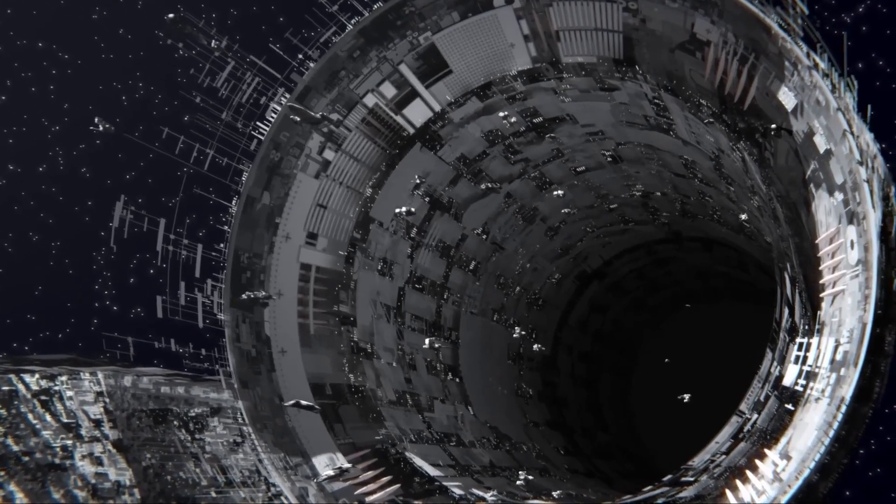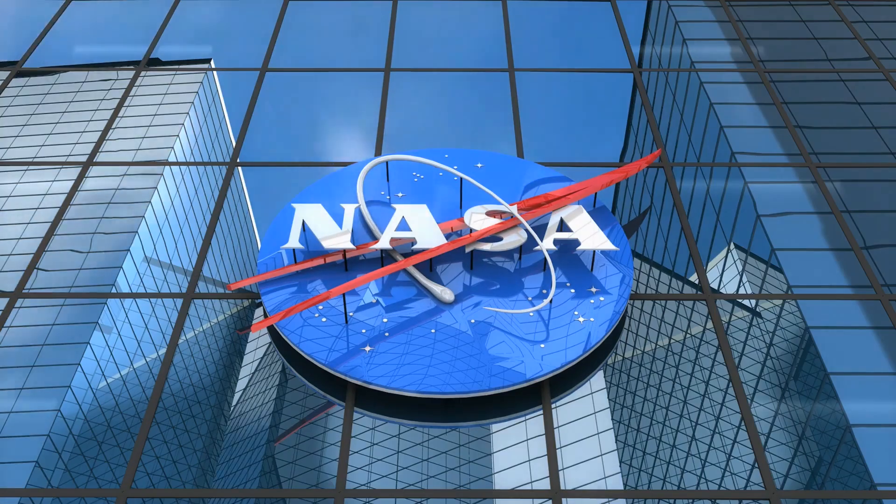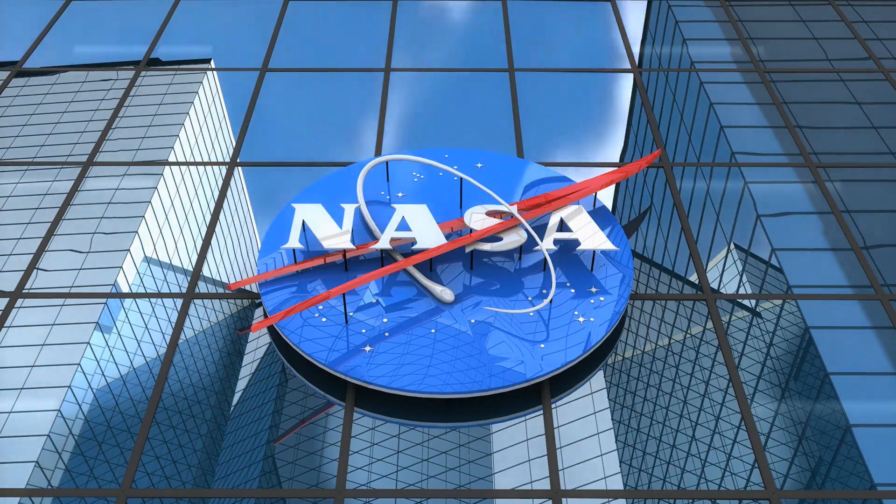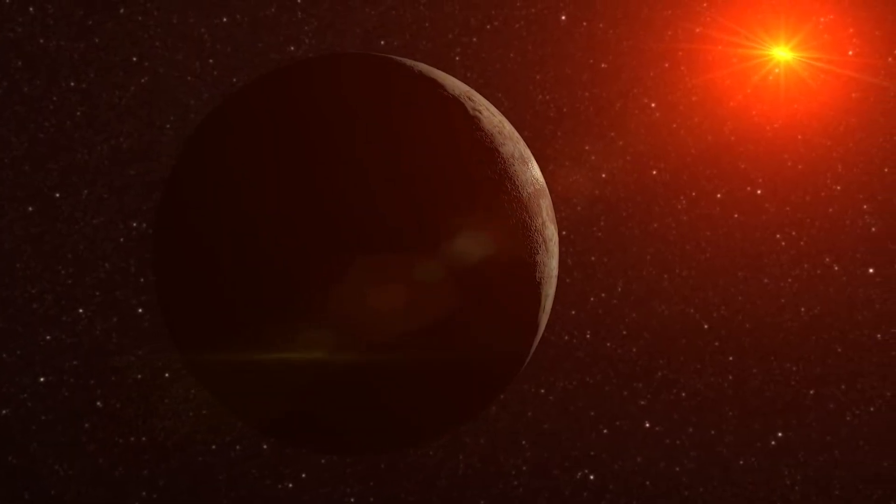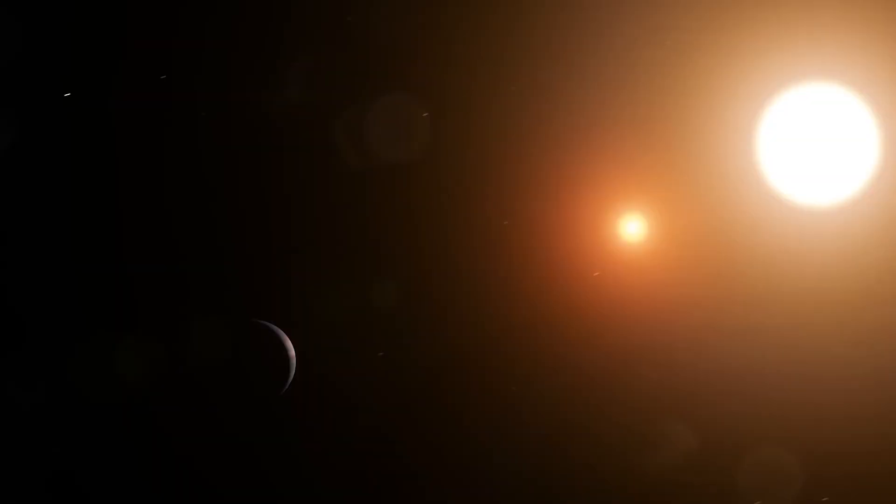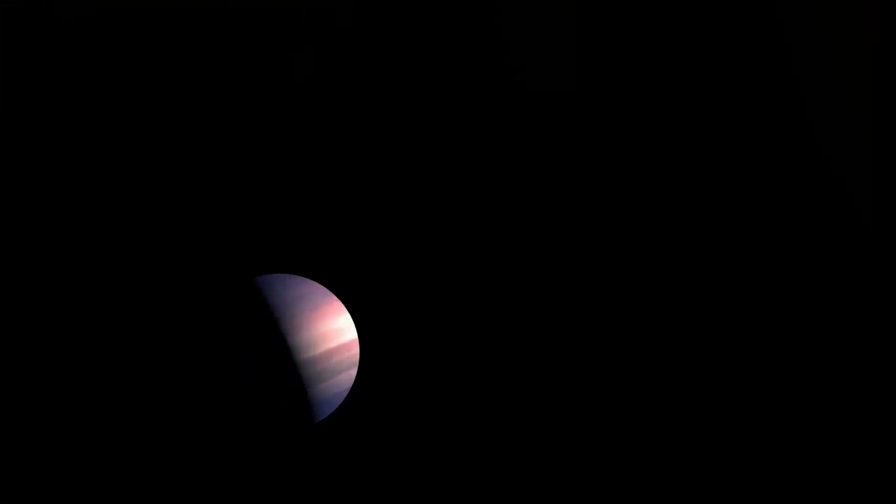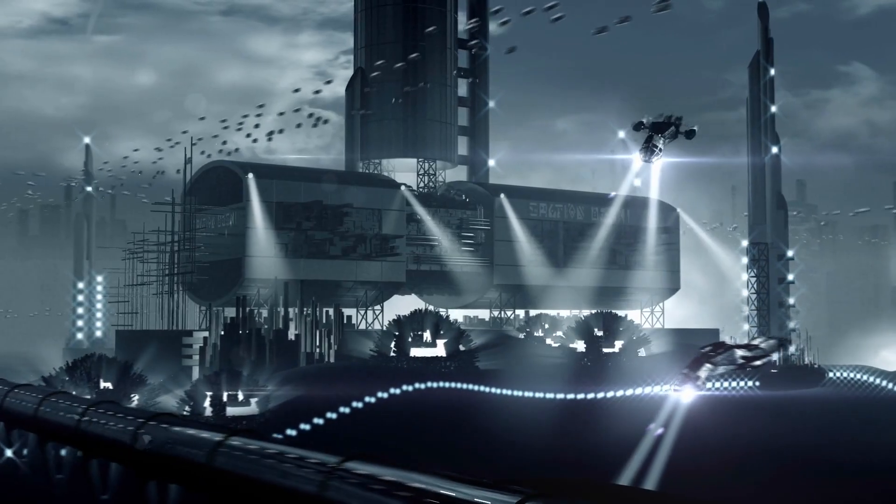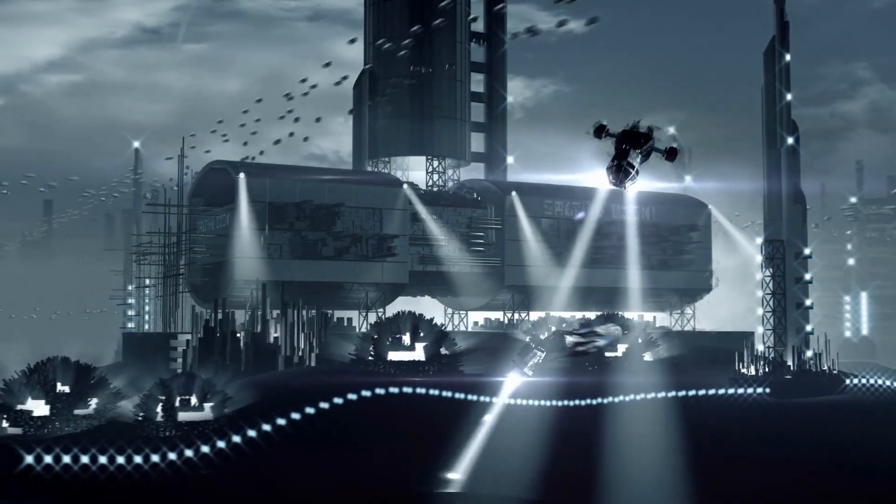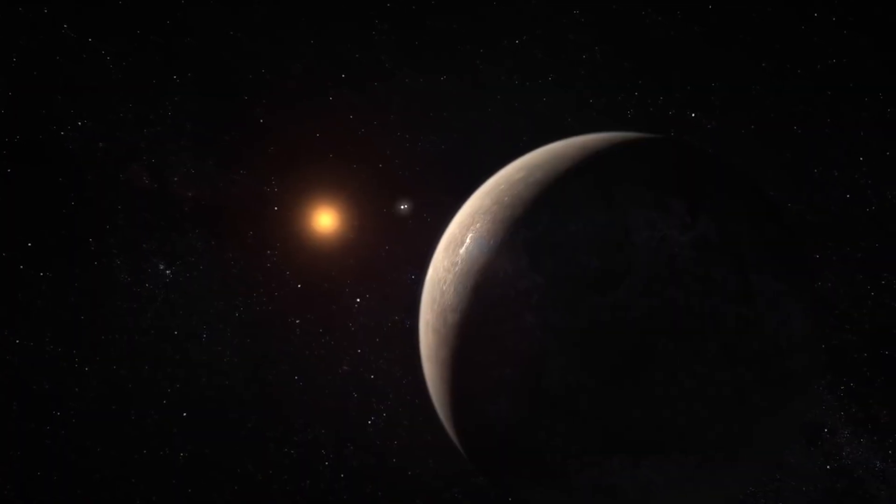In what could be the discovery of the century, NASA has announced that they may have just received the first-ever alien signals coming from Proxima B. The exoplanet has long been speculated to be habitable, and this new signal could finally prove it is home to an advanced alien race. Let's take a closer look.